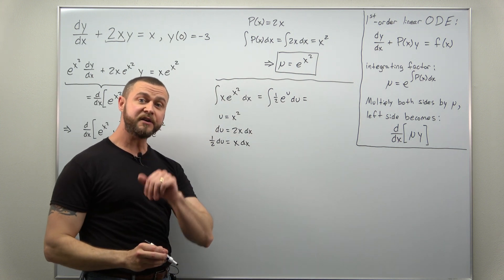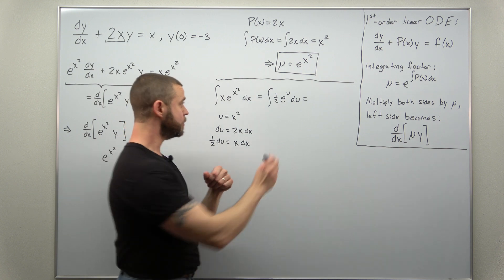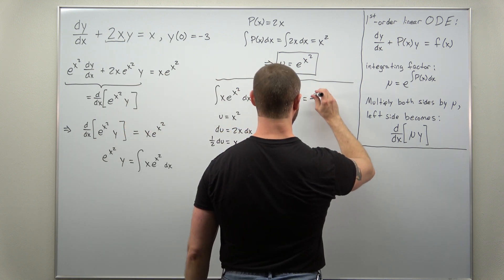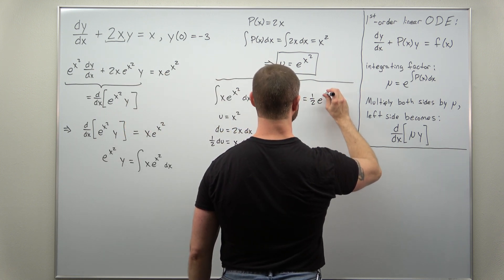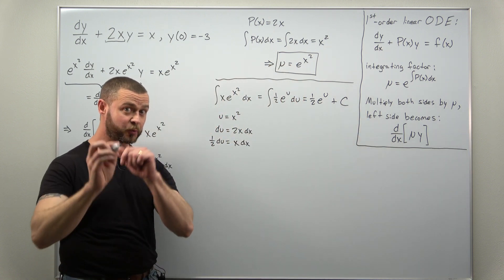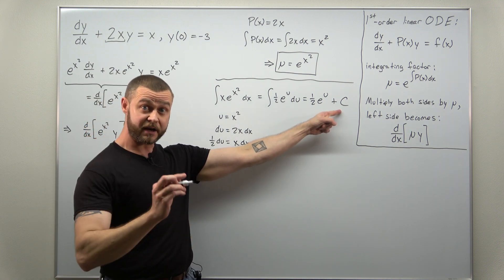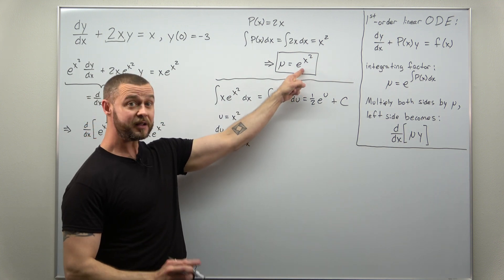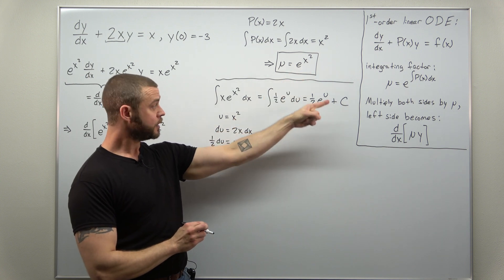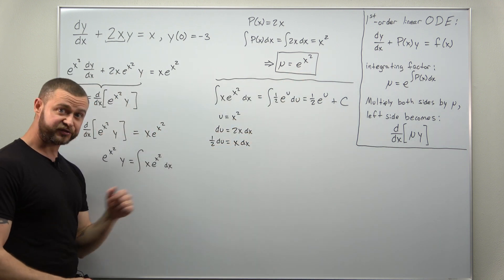And at that point, we have a very straightforward anti-derivative for the exponential function, just e to the u. The one-half is just a constant multiple. And at this point, because we're integrating that right side, we do need the plus c, the integration constant here. You don't need it in the integrating factor, but you do need it when you integrate the right side.